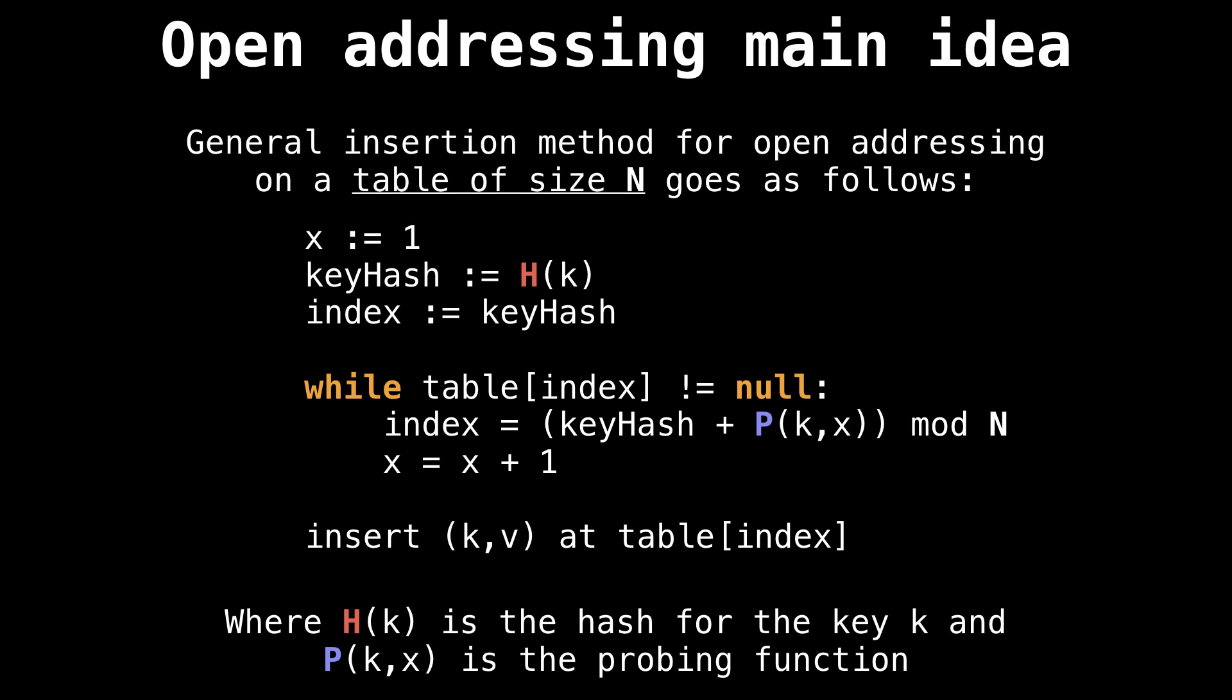While the table at the index is not equal to null, meaning that position is already occupied, we're going to offset the index by the key hash plus the probing function P(k,x) mod N. Every time we do this, we increment the variable x so that our probing function pushes us along one extra position. Once we found a position, we can insert the key value pair into the table at that position.